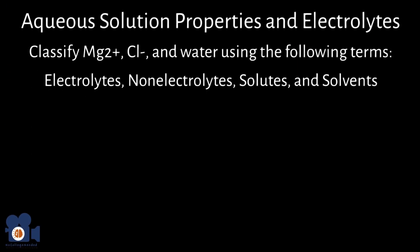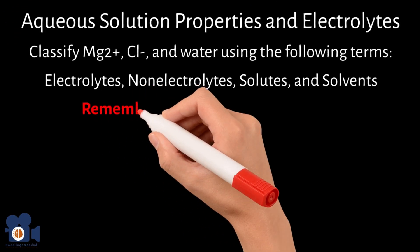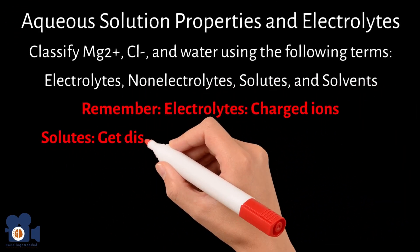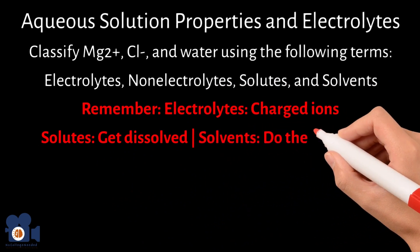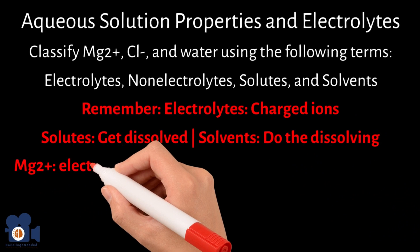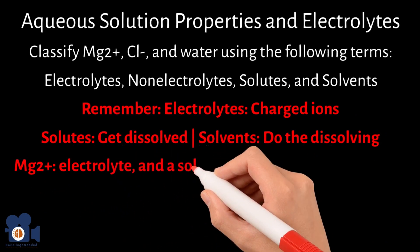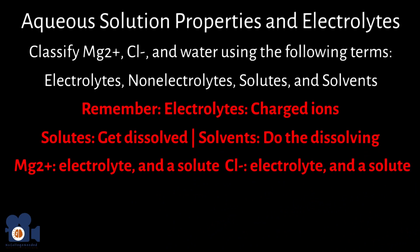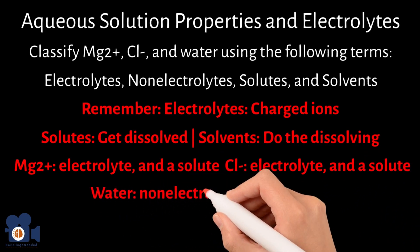And here are the answers. For Unit 4.1, remember electrolytes are charged ions, solutes are the species getting dissolved, and solvents are species doing the dissolving. Therefore, Mg2+ is an electrolyte and a solute, Cl- is an electrolyte and a solute, and water is a non-electrolyte and a solvent.